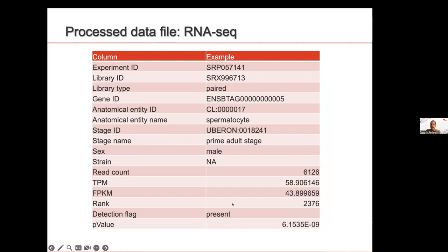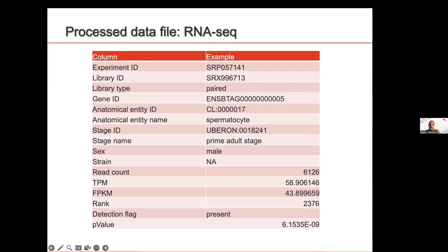In the processed data file, you retrieve real information including read count, TPM value, FPKM value for historical reasons, the actual rank of the gene in that sample, and the detection flag and p-value from that one single sample — meaning without integration by propagation. We also provide annotation and information about the protocol: the sequencing technology used, whether it was paired-end or single-end read, three-prime end, and so on.